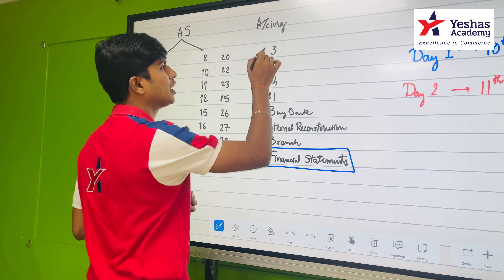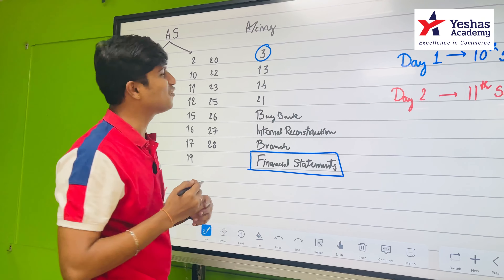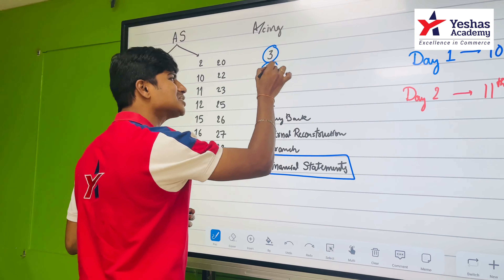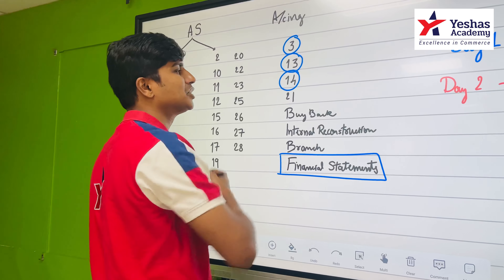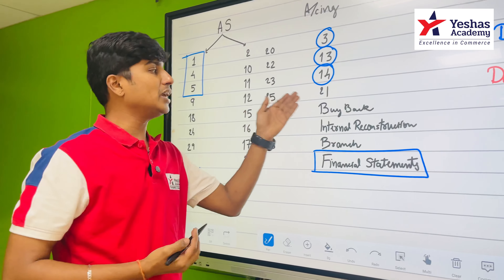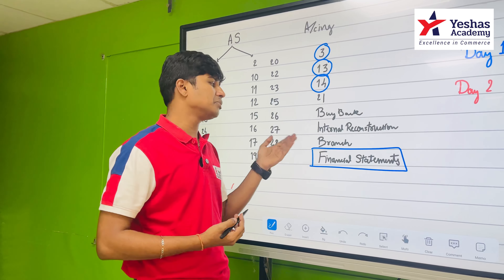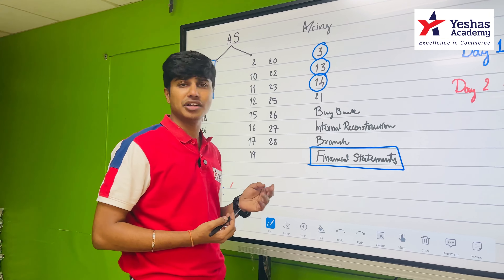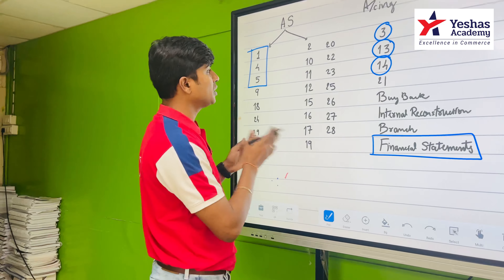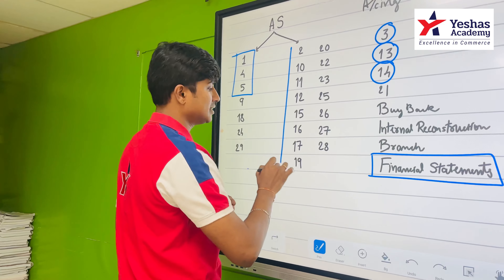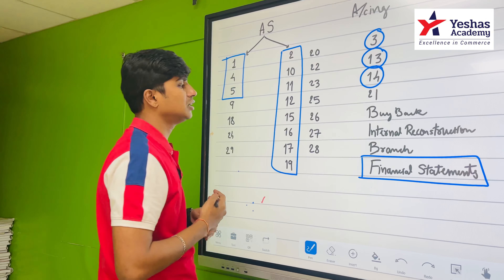After you do the financial statements, let's do a couple of accounting ones. You can do Cash Flow Statement — which I know is your favorite — you can do Investment Accounting AS 13, and also do Amalgamation which is AS 14. I'm going to keep AS 21 Consolidation for Day 2, alongside buyback, internal reconstruction, and branch.